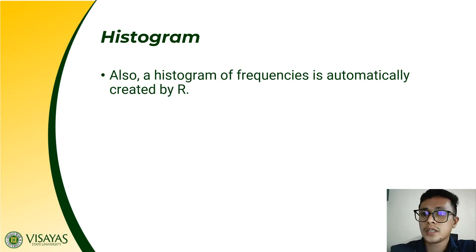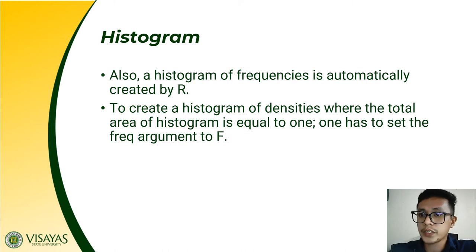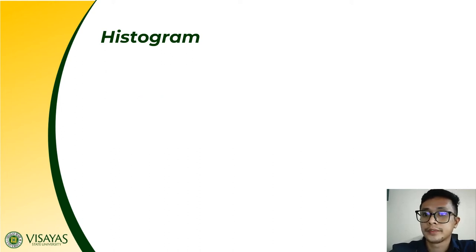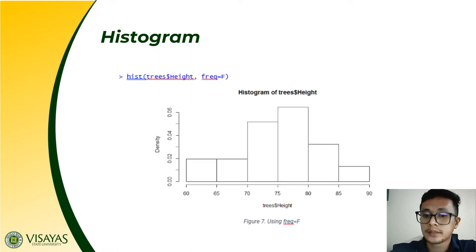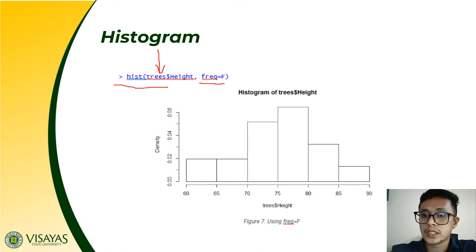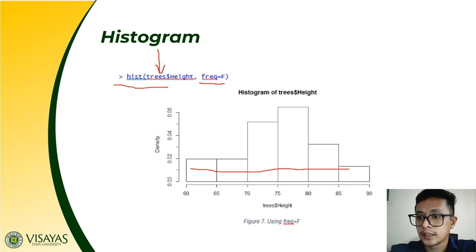A histogram of frequencies is automatically created by R. To create a histogram of densities — where the total area equals 1 — set the freq argument to FALSE (F). Note that the frequency label changes to density. We construct the histogram from the height variable of the trees dataset with freq=F, meaning the density of the shaded area equals 1, which is more or less equal to the frequency of our dataset.